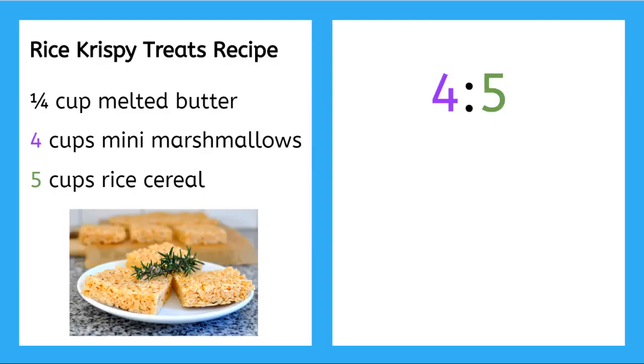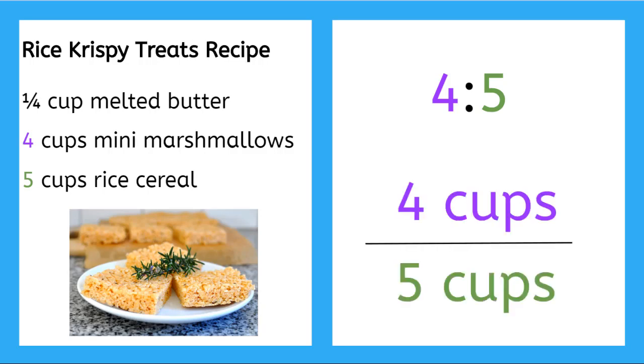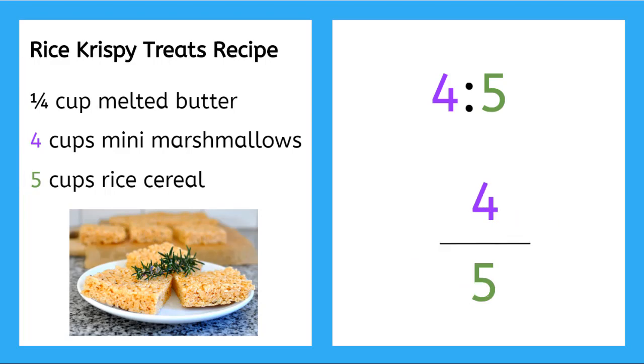We can write the ratio as four to five, or we can write this ratio as a fraction, like four cups over five cups. But since the units are the same, both are measured in cups, we can leave the units out and write the rate as four over five.